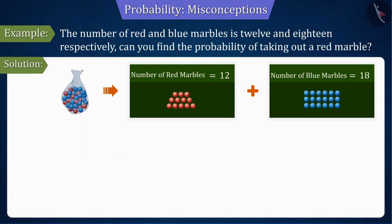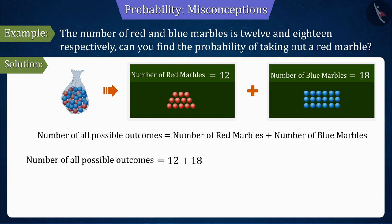It is given that the numbers of red and blue marbles are 12 and 18 respectively, whose sum will be equal to the total outcomes. We can say that the total number of possible outcomes will be 30.